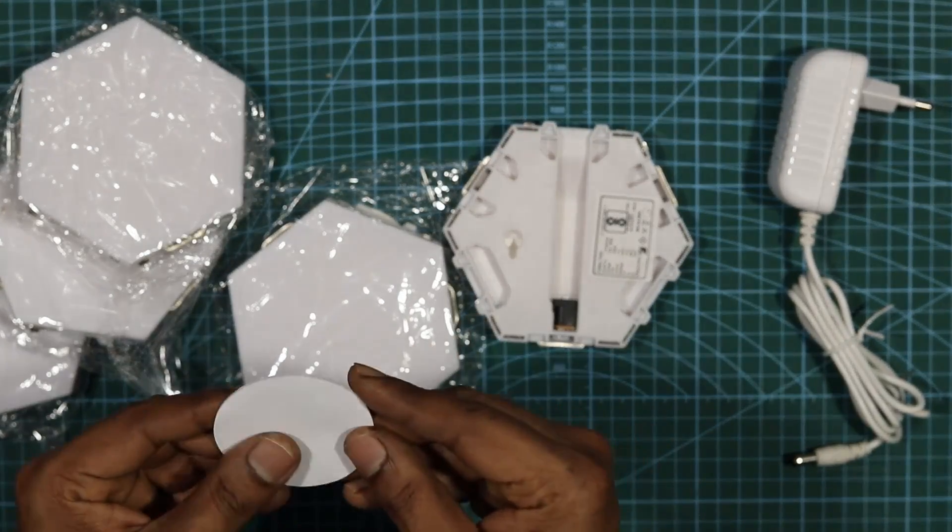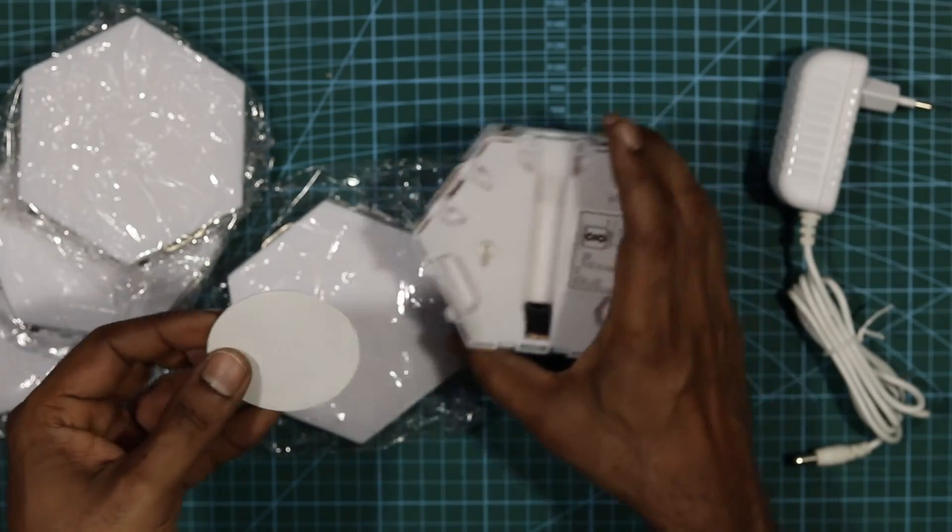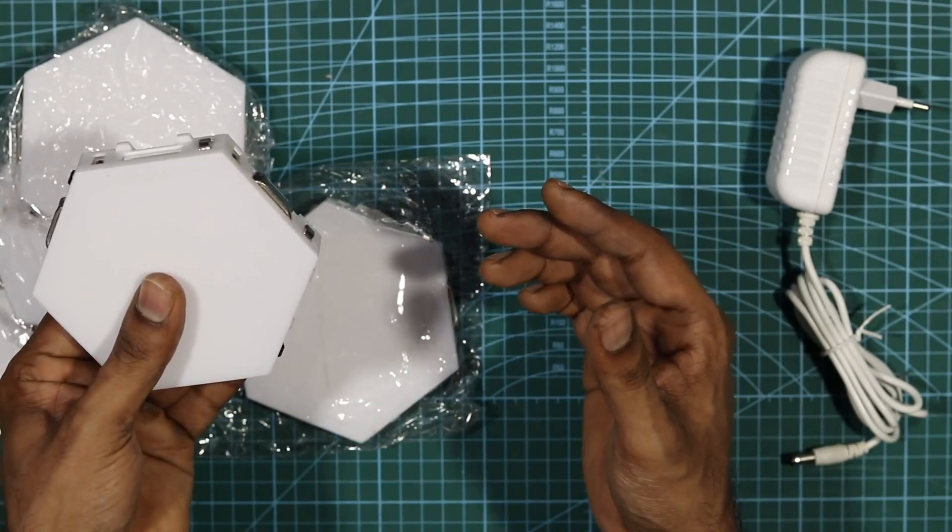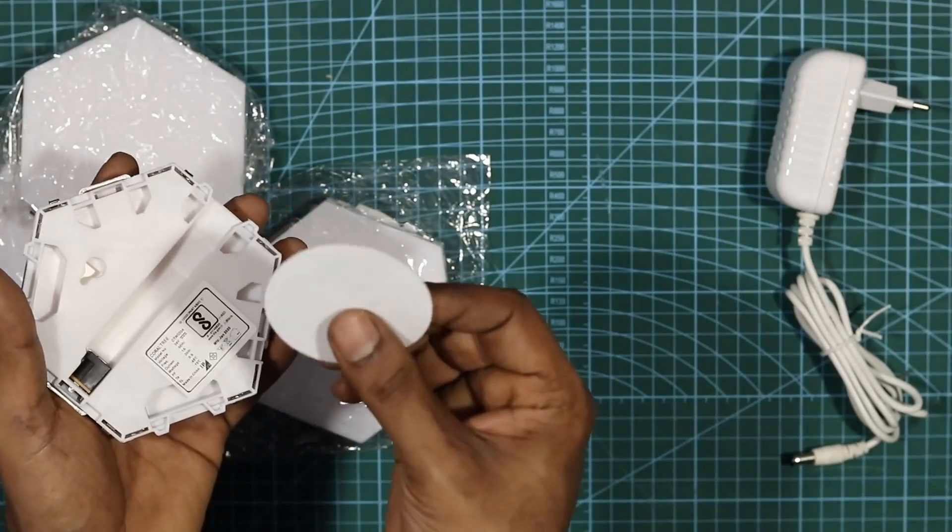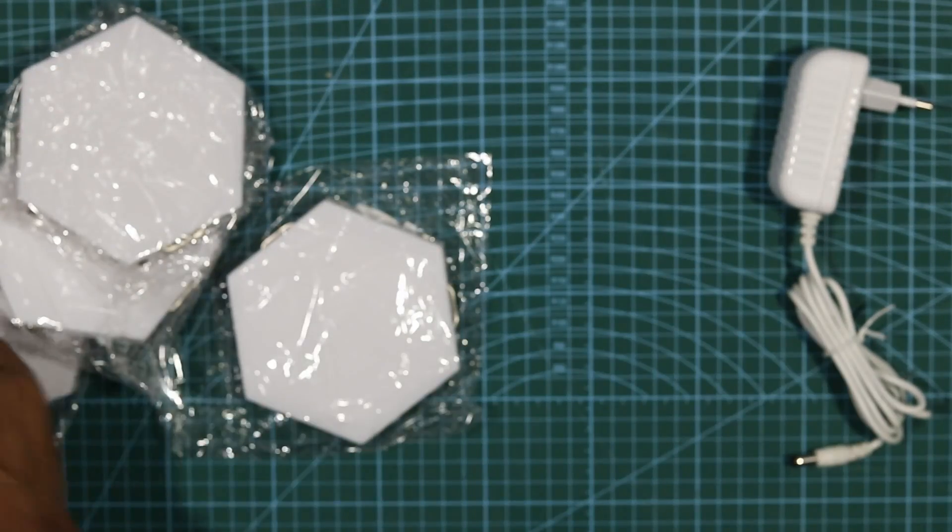And to mount them, you also have this double-sided tape. So it goes to the back side of the module and then that goes to the wall. So you can have it permanently fixed if you want to.